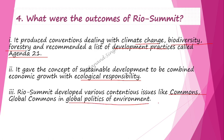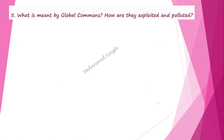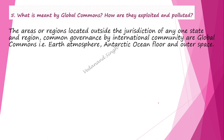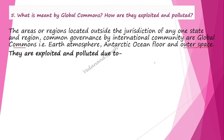Question 5 asks: what is meant by global commons and how are they exploited and polluted? In one line, the area or region located outside the jurisdiction of any one state, governed by international convention, is called a global common. Examples include the earth's atmosphere, Antarctica, ocean floor, and outer space.